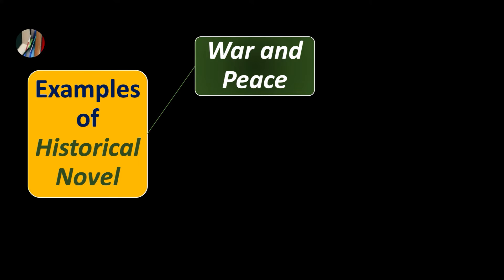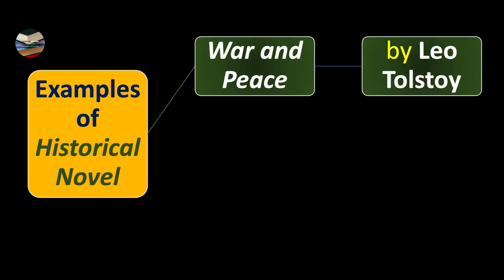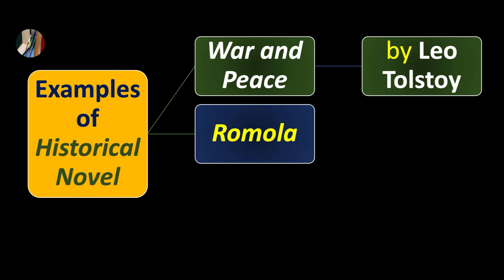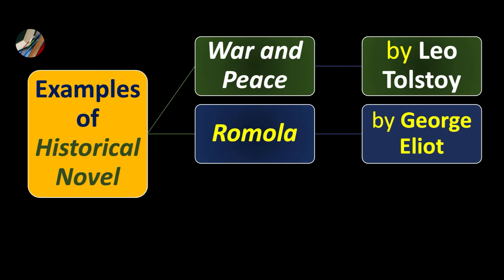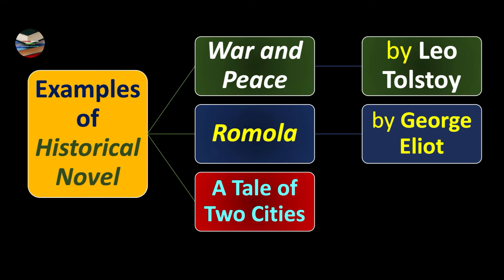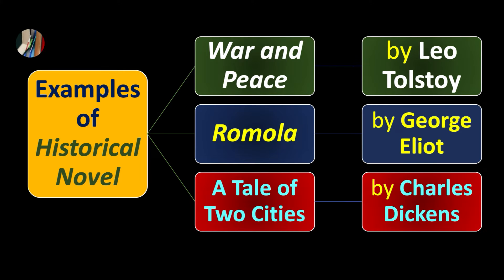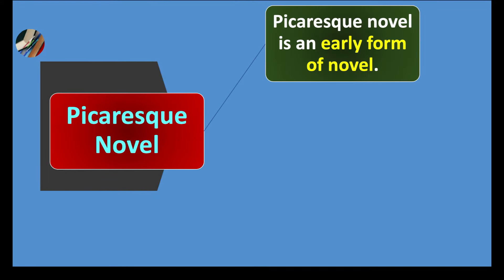The most famous examples of historical novel are: War and Peace by Leo Tolstoy, Romola by George Eliot, and A Tale of Two Cities by Charles Dickens.